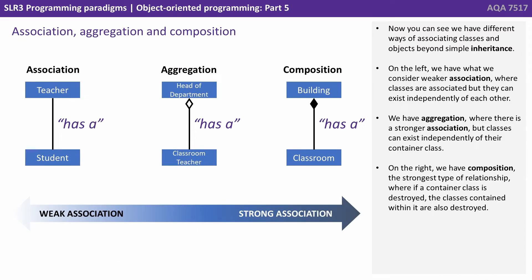So now you can see we have different ways of associating classes and objects beyond simple inheritance. On the left, we have weaker association, where classes are associated but can exist independently of each other. We have aggregation, where there is a stronger association but classes can still exist independently of their container class. And on the right, we have composition, the strongest type of relationship — if a container class is destroyed, the classes contained within it are also destroyed.